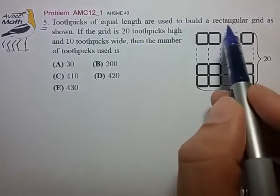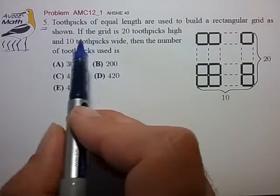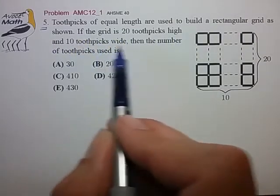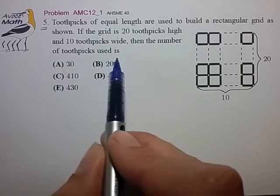Toothpicks of equal length are used to build a rectangular grid, as shown below. If the grid is 20 toothpicks high and 10 toothpicks wide, then the number of toothpicks used is.